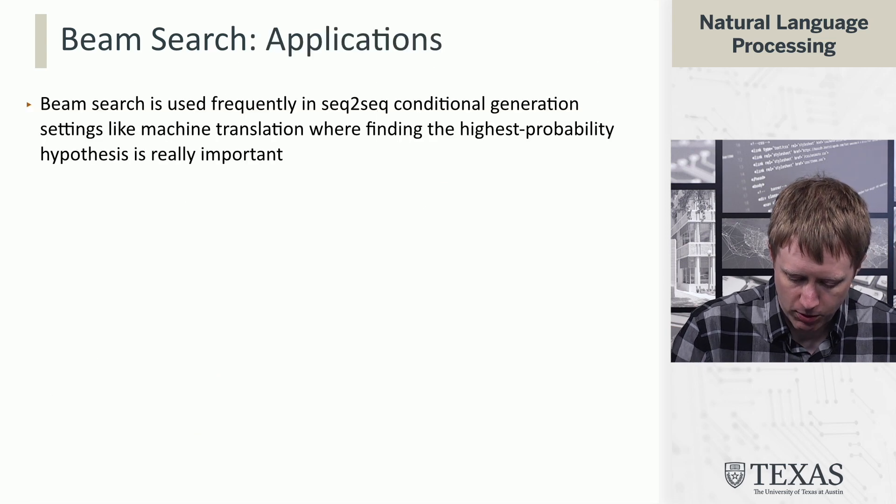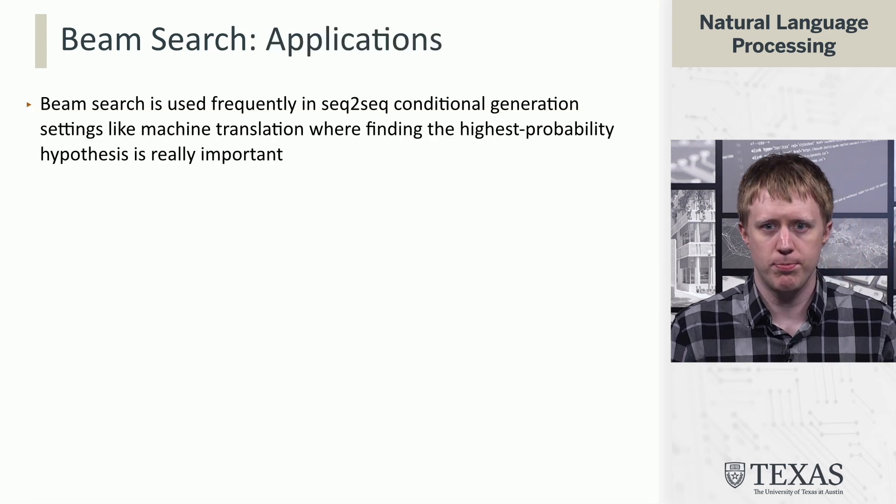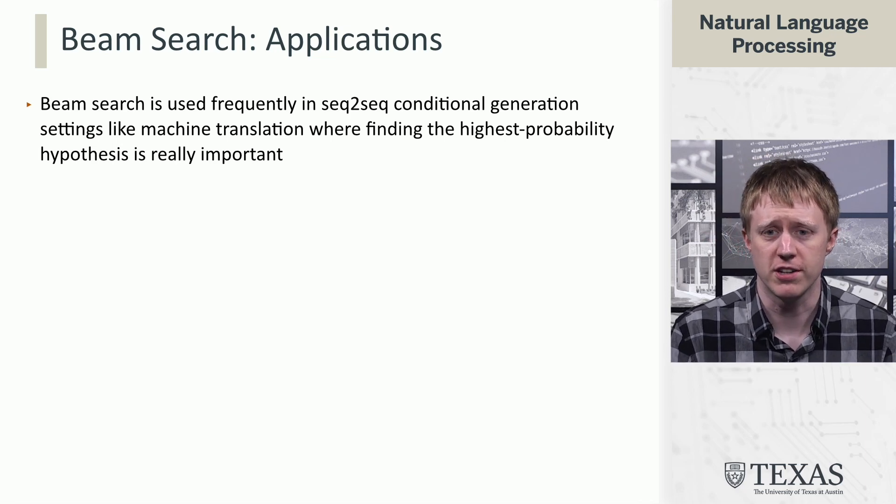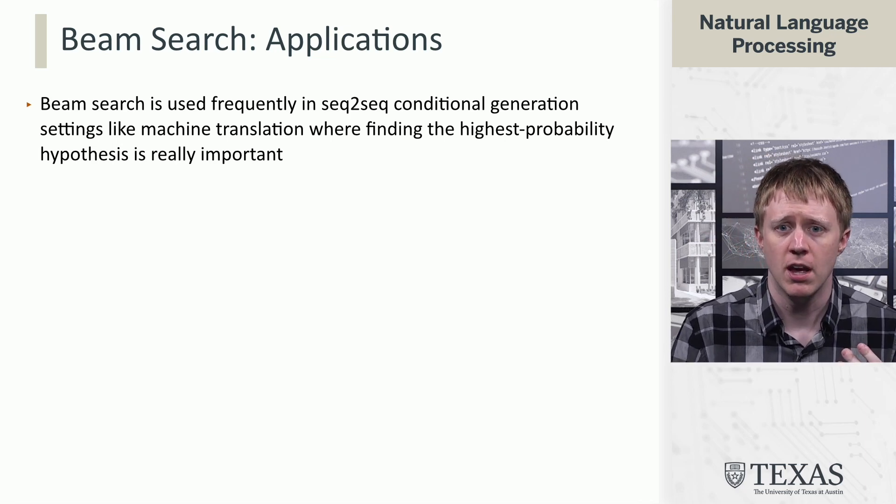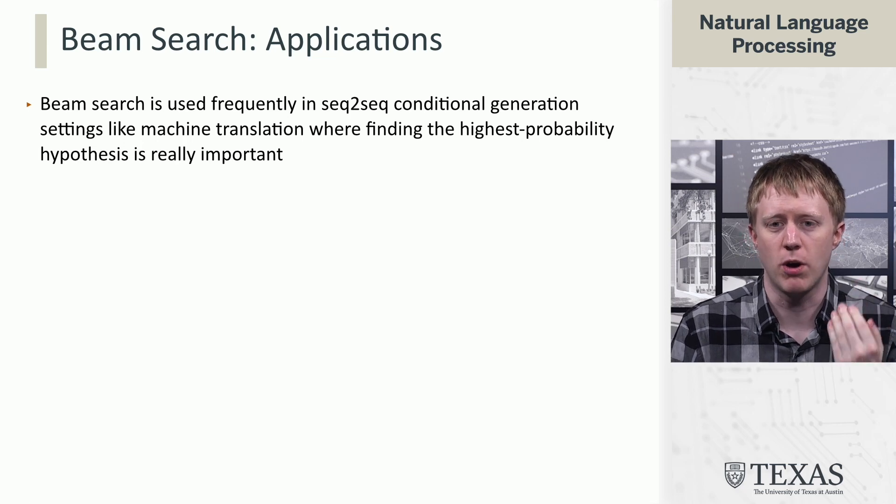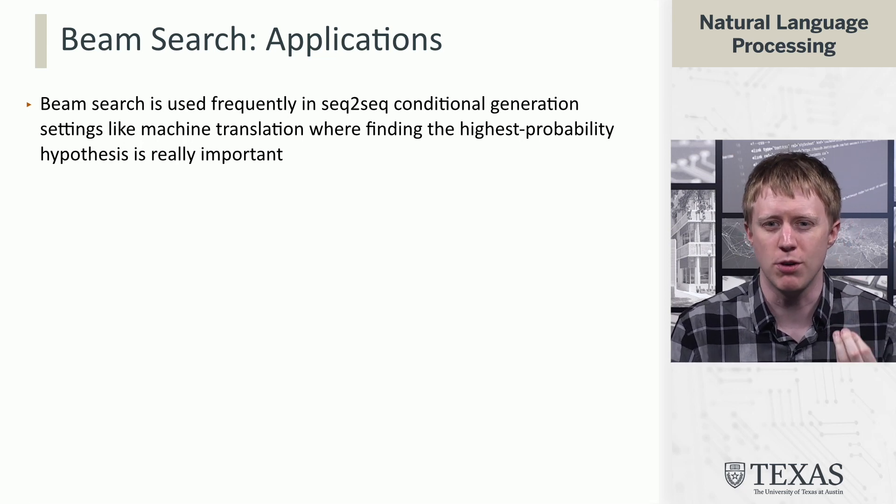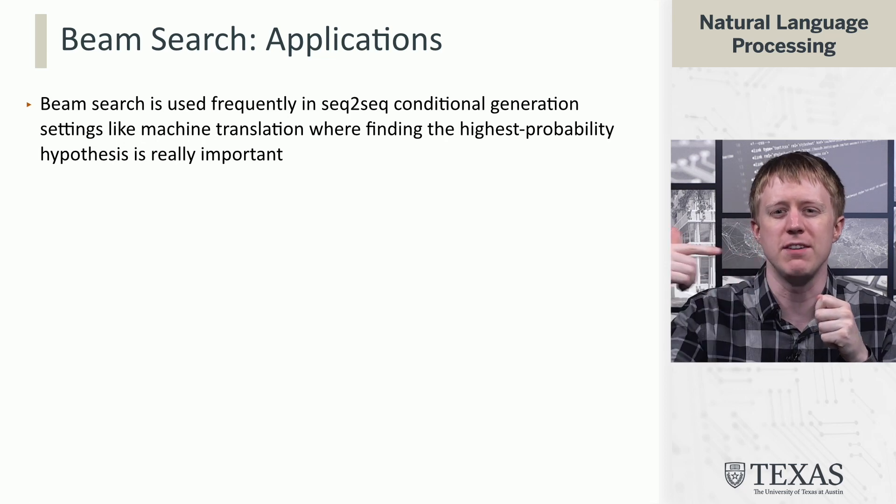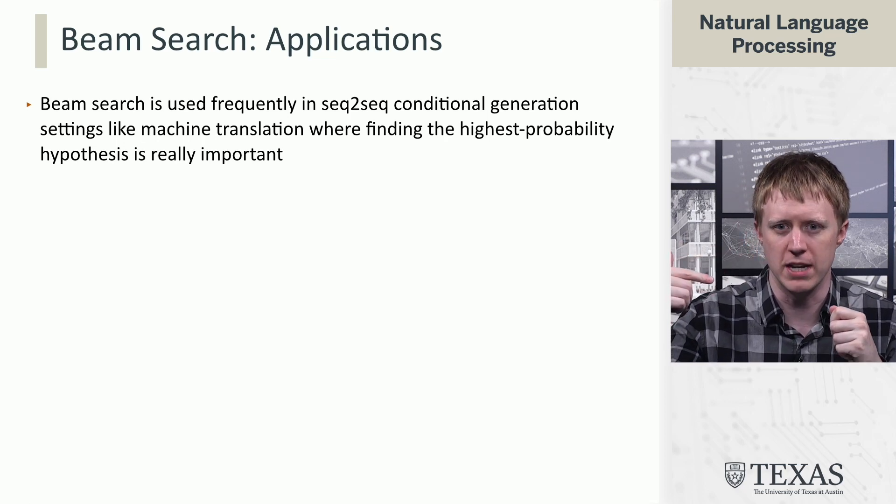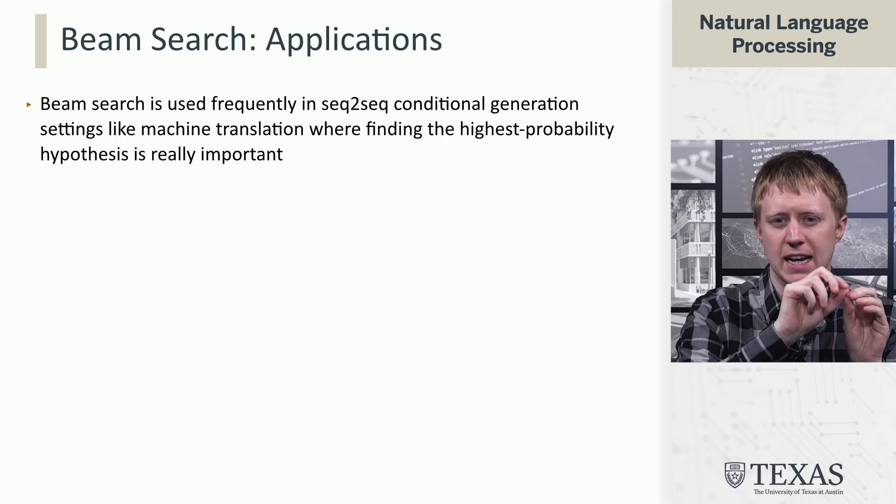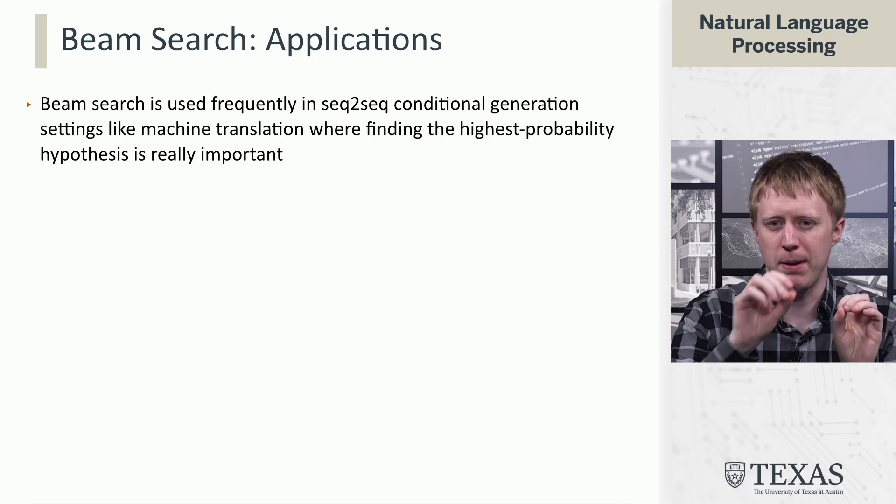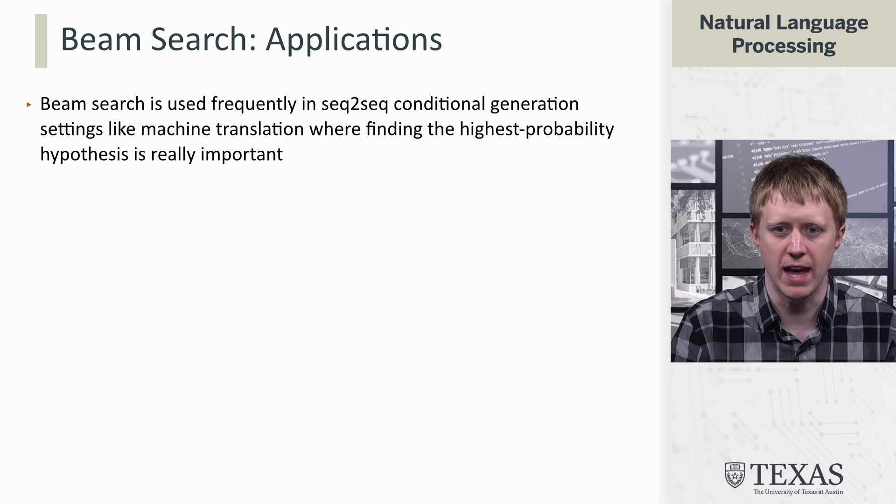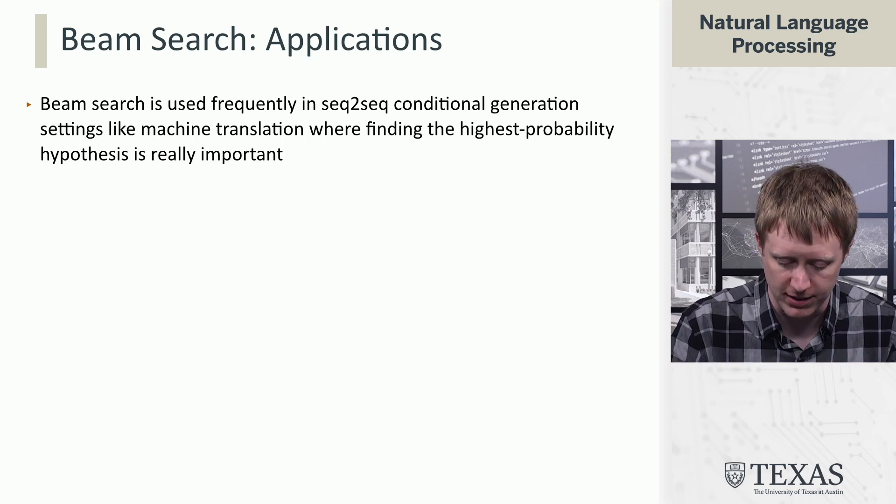So beam search you're going to see used most frequently in sequence-to-sequence conditional generation settings like machine translation where you really want to get a high probability thing. You know that greedy is going to find you something, but then beam search is going to find something of even higher probability. Greedy can get derailed down some path and pick some word that's going to lead to low probability stuff later, and beam search might avoid that. That can lead to better translations.